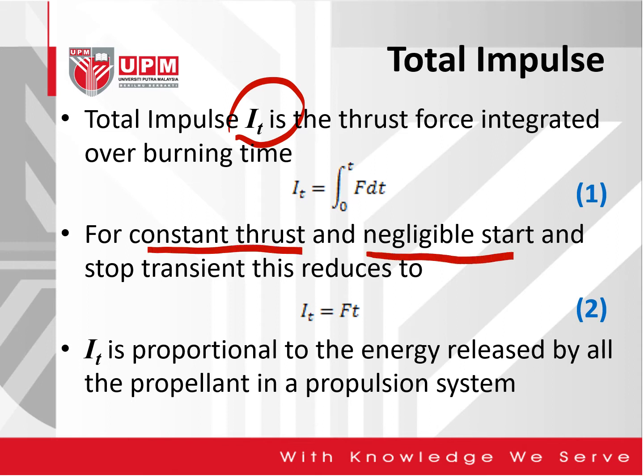For constant thrust and negligible start and stop transients, equation 1 reduces to equation 2, expressed as I_T equal to thrust times time. Total impulse is proportional to the energy released by all the propellant in the propulsion system.